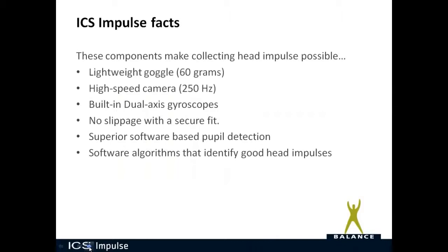There are several components that make collecting head impulses possible with this device. The first is lightweight goggles — only 60 grams — because you don't want the goggles to slip during head impulse testing. The high speed camera at 250 hertz is very important for picking up catch-up saccades. A built-in dual-axis gyroscope measures head movement. No slippage with a secure fit is very important. Superior software-based pupil detection ensures the pupil is always detected to capture catch-up saccades. And two software algorithms identify good head impulses and good data, ensuring only good data is analyzed.